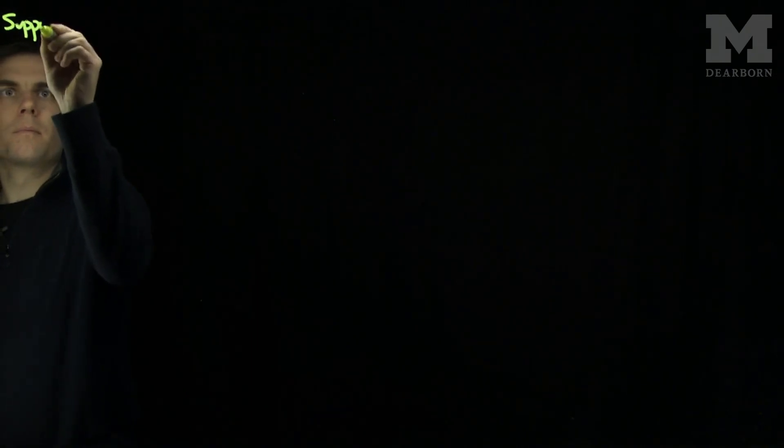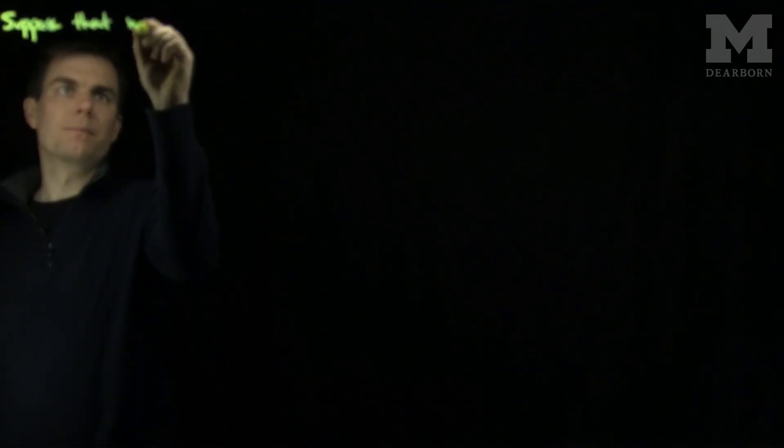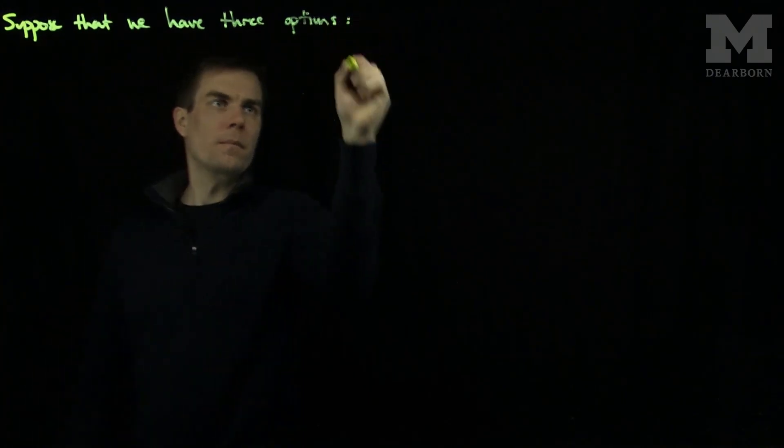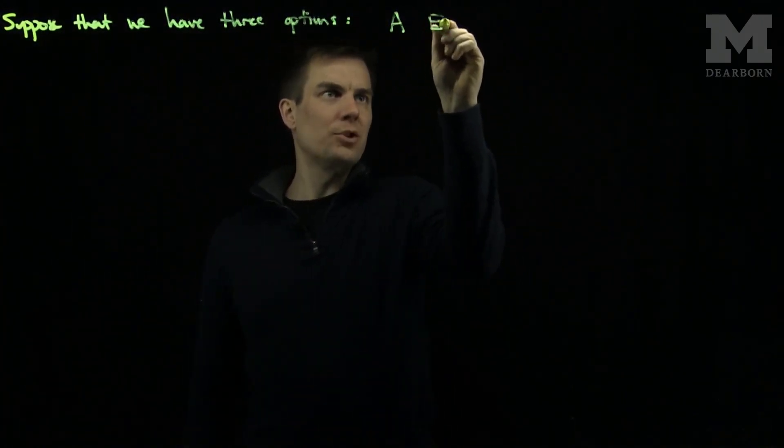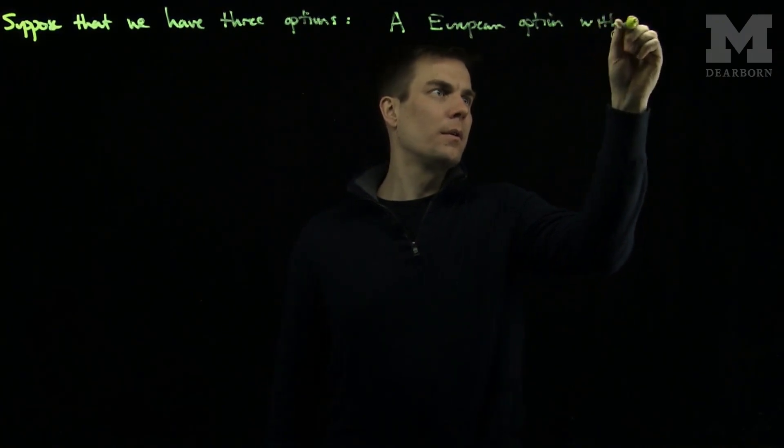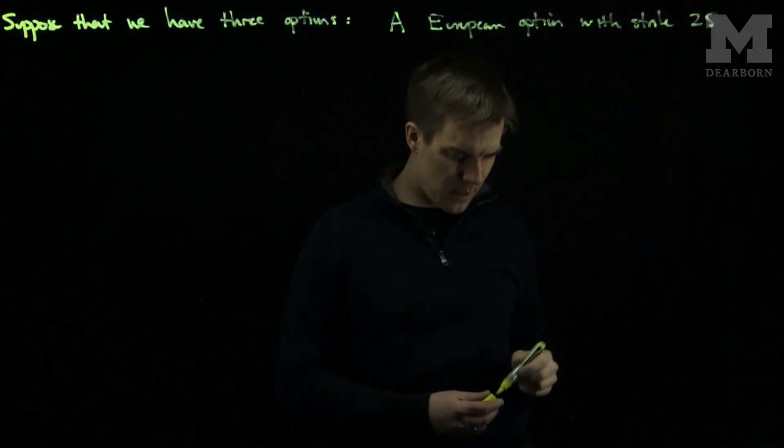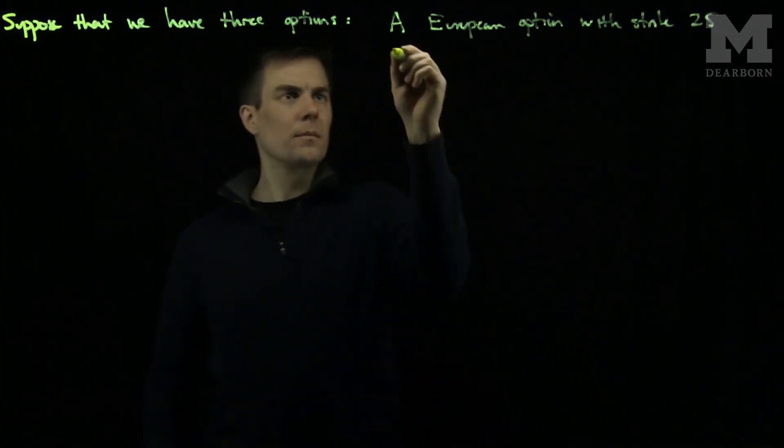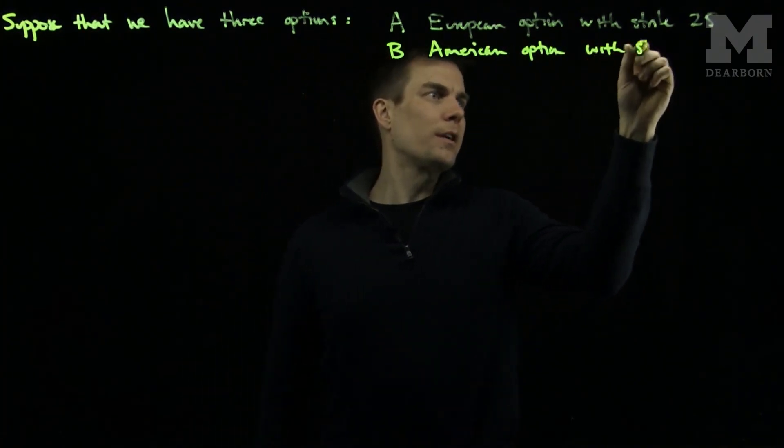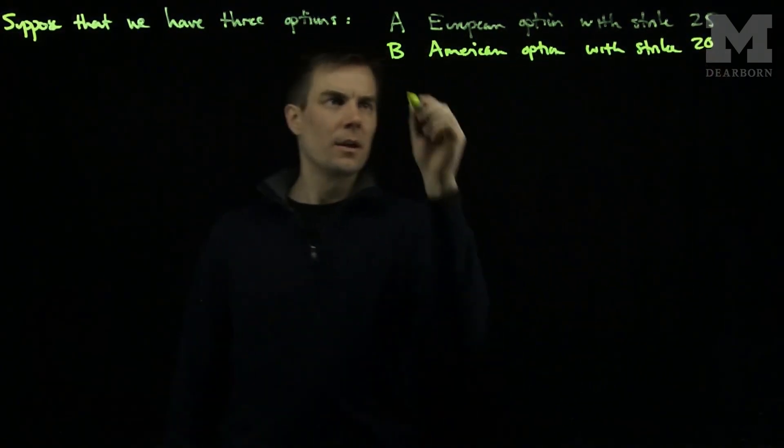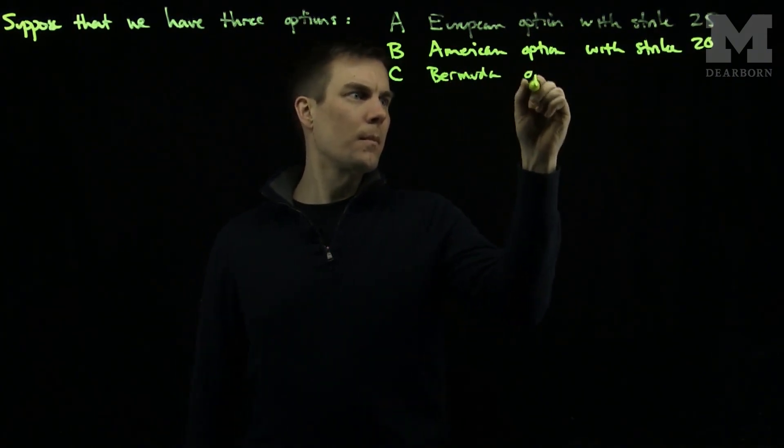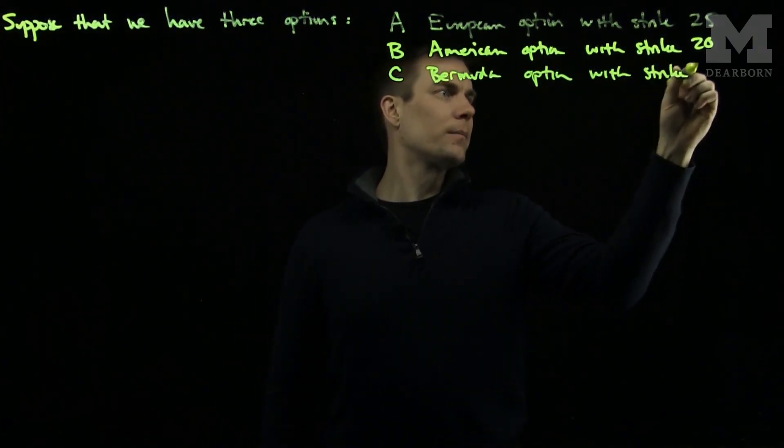Let's suppose that we have three options. Option A will be a European option with strike 25. Option B will be an American option with strike 20. And option C will be a Bermuda option with strike 30.